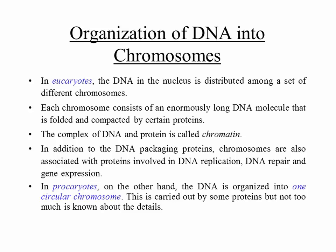In eukaryotes, the DNA in the nucleus is distributed among a set of chromosomes. Each chromosome consists of an enormously long DNA molecule, folded and compacted by certain proteins. The complex of DNA and protein is called chromatin. In addition to DNA packaging proteins, chromosomes are also associated with proteins involved in DNA replication, DNA repair, and gene expression, since the replication machinery including DNA polymerase must get access to the DNA.